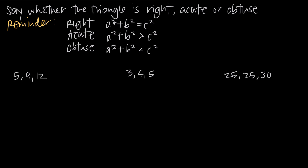What it tells us is that if we square the lengths of both of the legs — so if the legs of that right triangle are a and b — and if we square their lengths and add those squares together, and that sum is equal to the square of the length of the hypotenuse, then it's a right triangle. An extension of that idea is that if we know the lengths of all three sides of a triangle, we can say whether or not the triangle is a right triangle, an acute triangle, or an obtuse triangle.